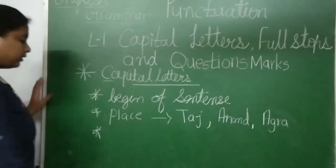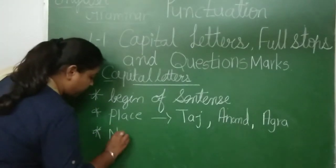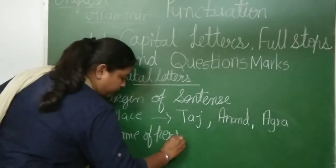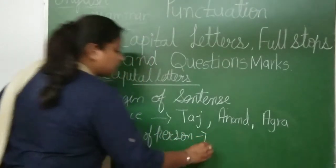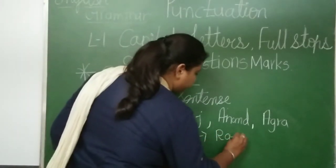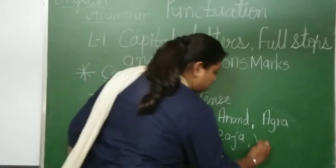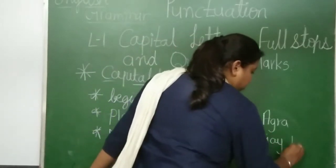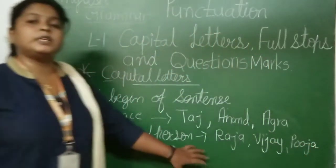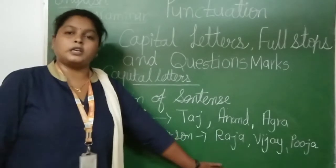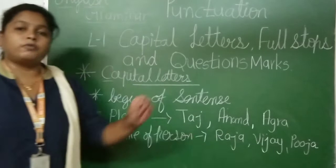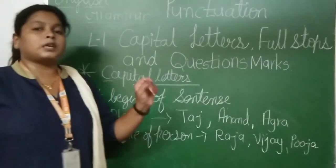And after that, the name of a person. When you write a person's name, the first letter should be capital — for example, Raja, Gujali, Puja. Whenever you are writing the name of a person, the first letter must be capital. First letter always comes in capitals whenever you are writing the name of a place or the name of a person.